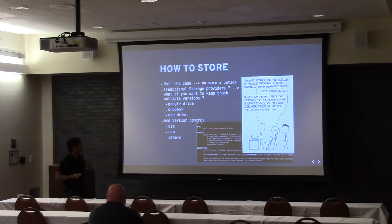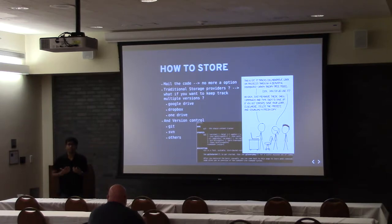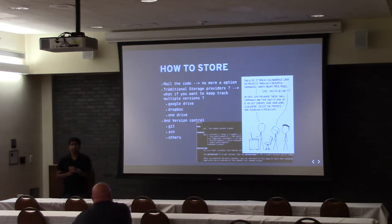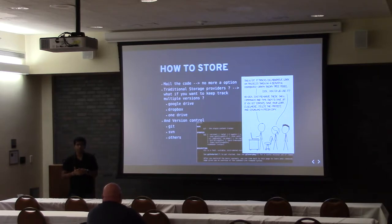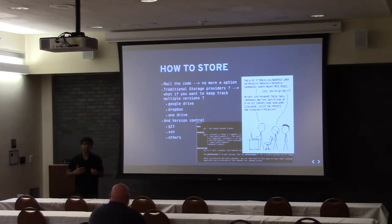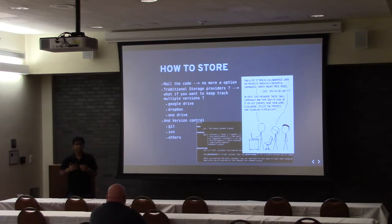Later on, we started using traditional software providers like Google Drive, Dropbox, and OneDrive. But the inherent problem with all this kind of software is we couldn't maintain the versions of the whole software. For example, if I made a change ten days back and want to get that change now, if I use Google Drive, every time I upload my files it kind of overrides it. Unless it's Google Docs, which recently introduced version control — but that didn't feel like a proper way to store code.